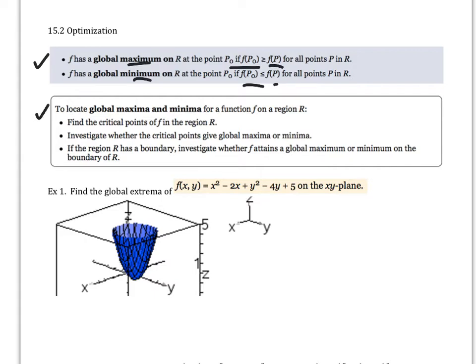To locate the global maxima and minima for a function, find the critical values, and then investigate whether the critical value gives global maxima or minima. And this isn't as well-defined as what we did in Calc AB or BC, but you have to analyze a little bit more. And then if the region has a boundary, investigate whether f attains a global maximum or minimum on the boundary of R. So you have to check the different points that we do have.